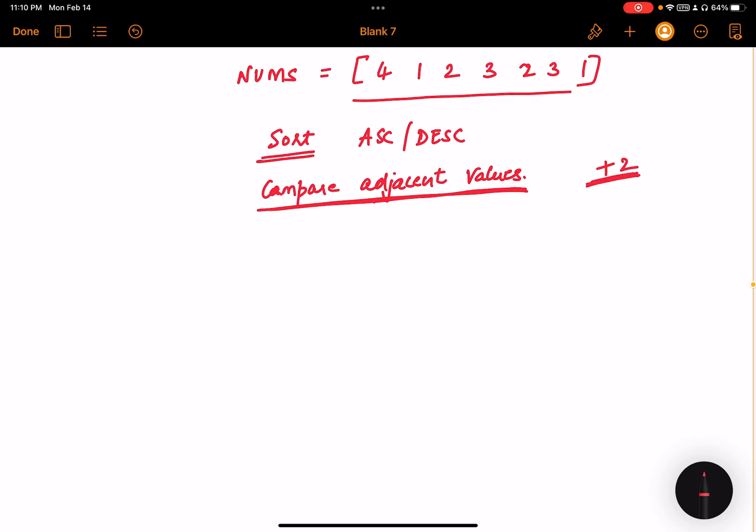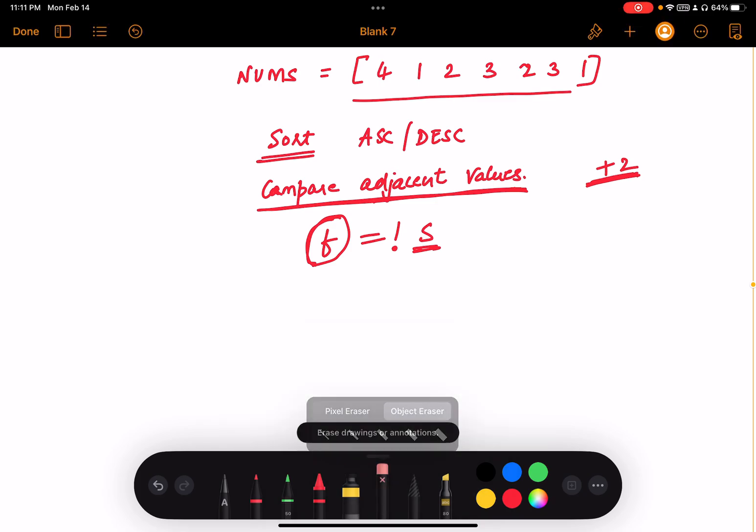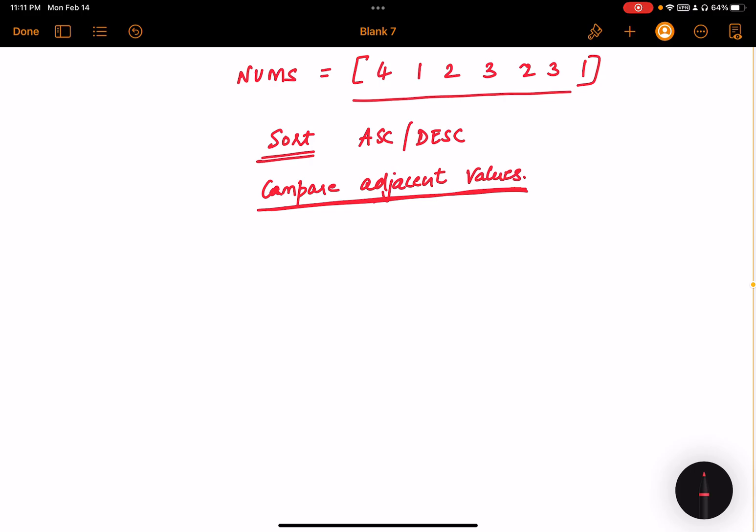While comparing the adjacent values, we will be incrementing our pointer by two only, then we will be comparing two new values every time. And if the first value is not equal to the second value, it means we have found the number which is not repeated and we can return that value.